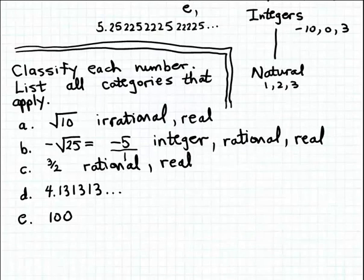Let me scroll up here and let's look at example D. Now, here we have a decimal number, 4.131313, and the ellipsis here, or the dot dot dot, indicates that that 1, 3 pattern continues to form the decimal expansion of this number.